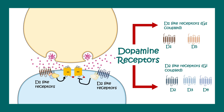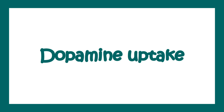In different circuitry we get different balances of these kinds of receptors, and that modulates the difference in the dopamine response.